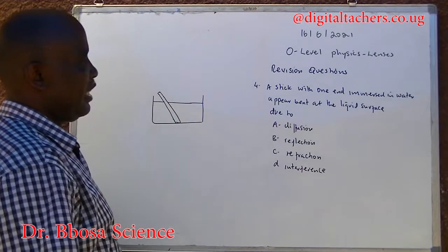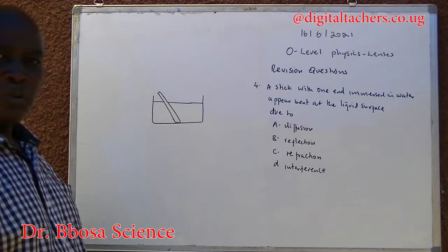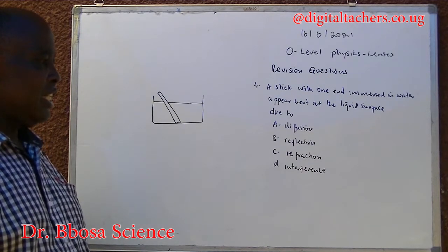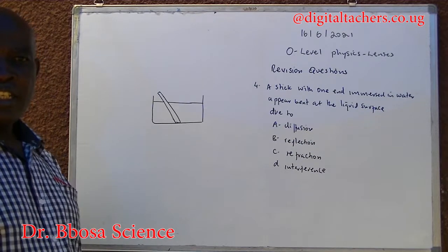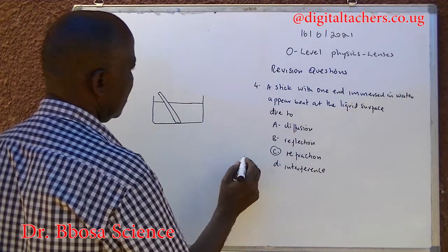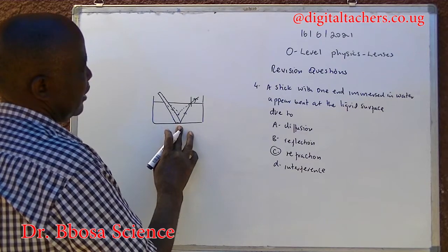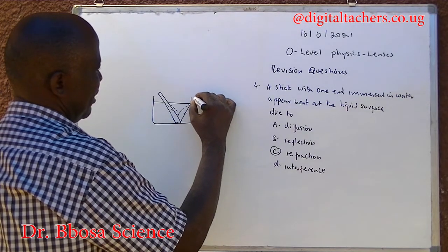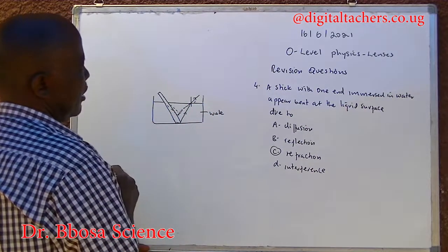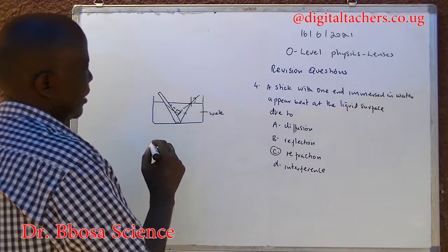Number four: a stick with one end in water, or a mast in water, appears bent at the liquid surface due to: A — Diffusion, B — Reflection, C — Refraction, D — Interference. You can pause and answer. The answer is C, due to refraction. Rays from the bottom of the stick will bend away from the normal, going from a denser medium to a lighter medium. So it will appear to come from a different position, making the stick appear bent.